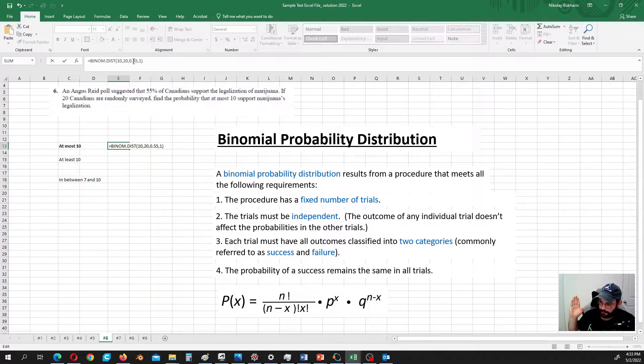So it's going to calculate the probability for 10, for 9, for 8, for 7 and so on and so forth. And add all those probabilities up.